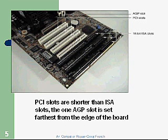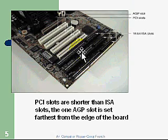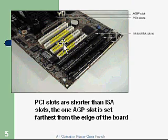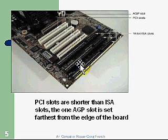Here's an example of a motherboard that still has some ISA slots on it. The ISA slots are the black slots, while the PCI — the shorter slots — are the white slots. The black ISA slots are 16-bit versus 32-bit for the PCI.